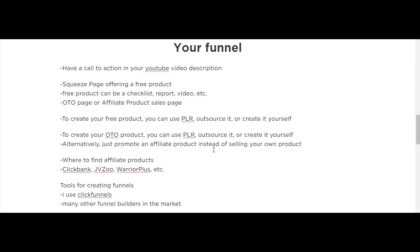When they click the link in your description, they're brought to your funnel. The first page should be a squeeze page offering a free product with an opt-in form where they enter their email address. The free product can be a checklist, report, or video. You can create these yourself, hire someone on Fiverr, or buy products with Private Label Rights (PLR).